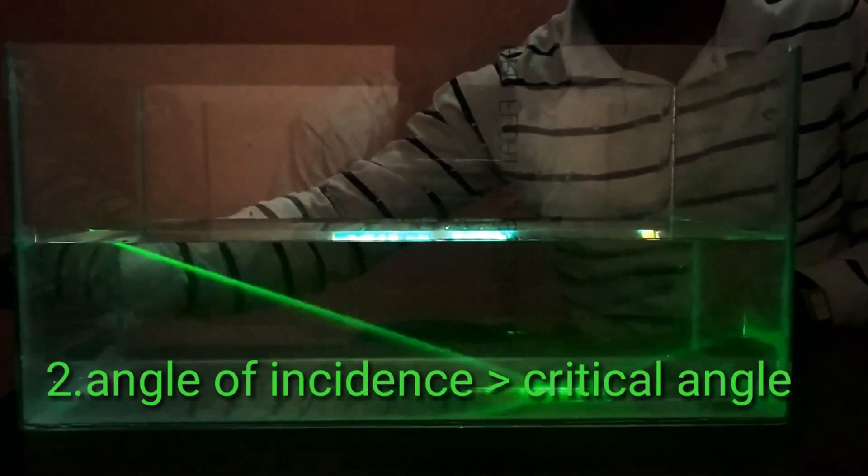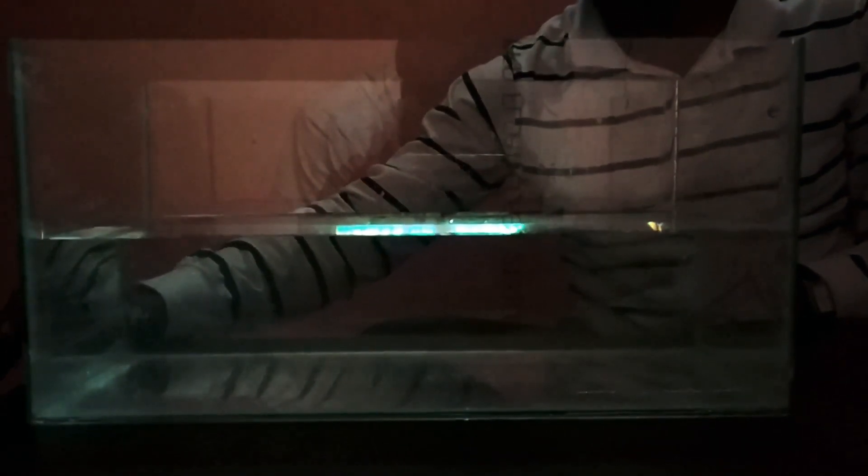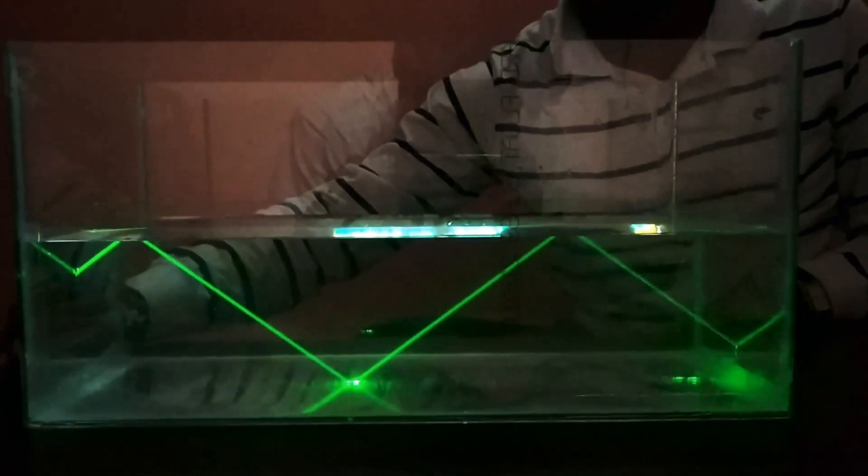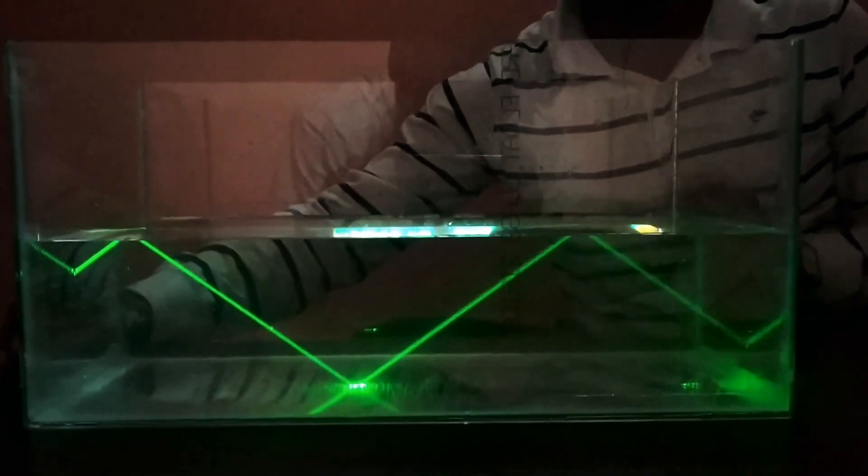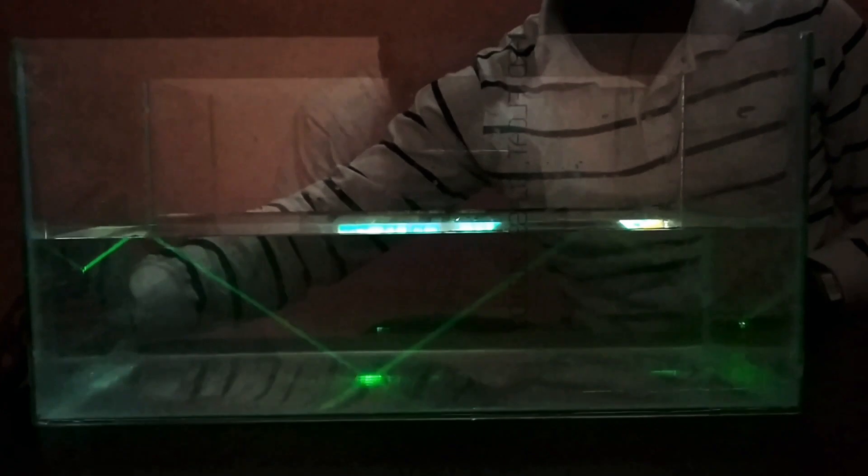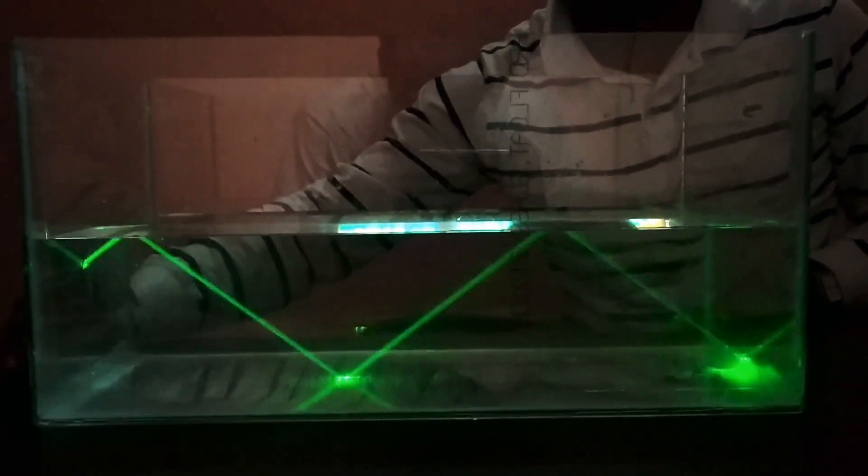The second condition is the angle of incidence must be greater than critical angle. Critical angle is the angle of incidence at which the light ray just grazes the surface. So here I have to increase the angle of incidence beyond the critical angle, then the light ray undergoes total internal reflection. You can see the beautiful total internal reflection into the water.